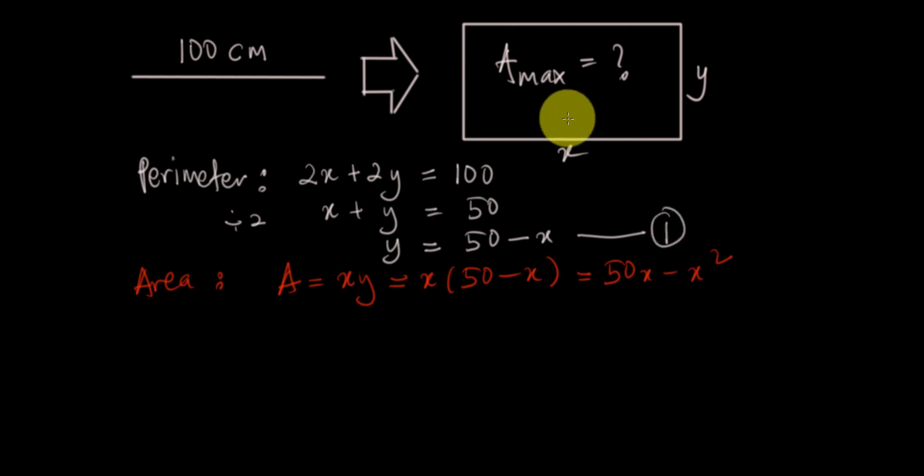You want to find the maximum. Maximum is the relative maximum point. Relative maximum point happens when f prime x is equal to 0. What you need to do now is to differentiate A against x. So find the derivative: dA/dx is equal to 50 minus 2x.